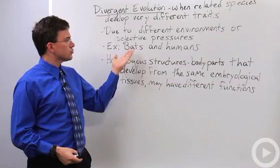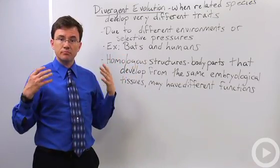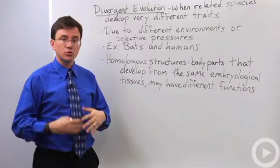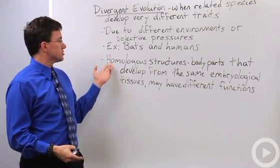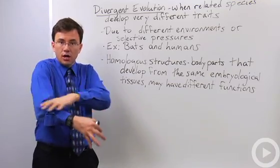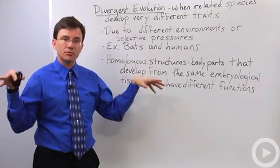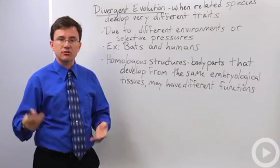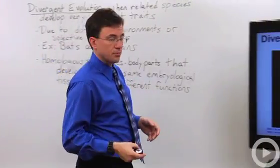A good example of this might be something like bats and humans. Bats and us humans are both mammals. We share a lot of common characteristics. But we also show what are called homologous structures. Our upper arm and a bat's upper limb share the same bones, even though they're used for different purposes.